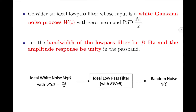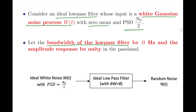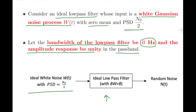Let us now move on to the mathematical aspects. Let us consider an ideal low pass filter whose input is a white Gaussian noise process w(t) with mean equal to 0 and power spectral density equal to N₀/2. Let the bandwidth of the low pass filter be denoted by capital B hertz and let the amplitude response of this filter be unity within the pass band. A diagrammatic representation is shown here.